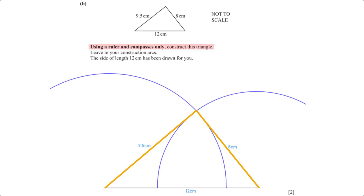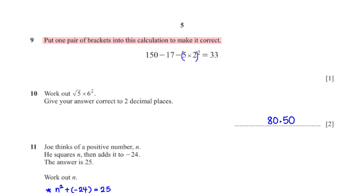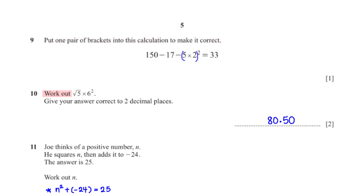Put one pair of brackets into this calculation to make it correct. We need to put brackets around 5 × 2. 5 × 2 = 10, so 150 − (17 − 10)² gives us 33.